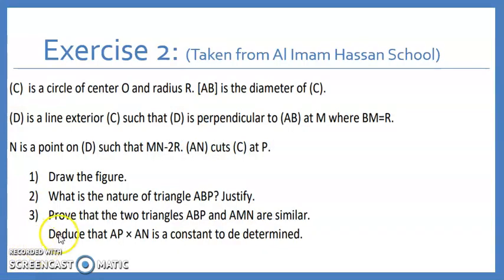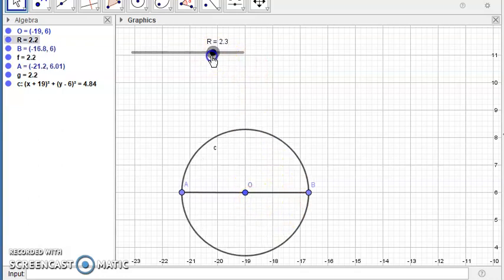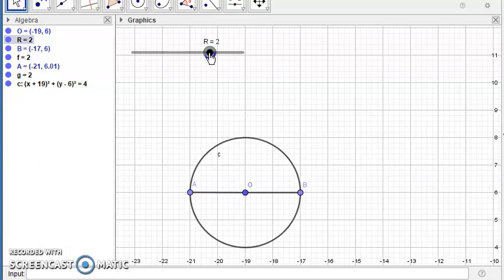So I'll start by this exercise. It's taken from Al-Imam Hassan High School. C is a circle of center O and radius R and AB is the diameter of C. So let's draw it together. So you can draw a circle of any radius because it's not specified. So I drew a circle of center O and diameter AB. I chose the radius to be 2 but you can draw any circle because it's not specified as I said. So this is the circle.